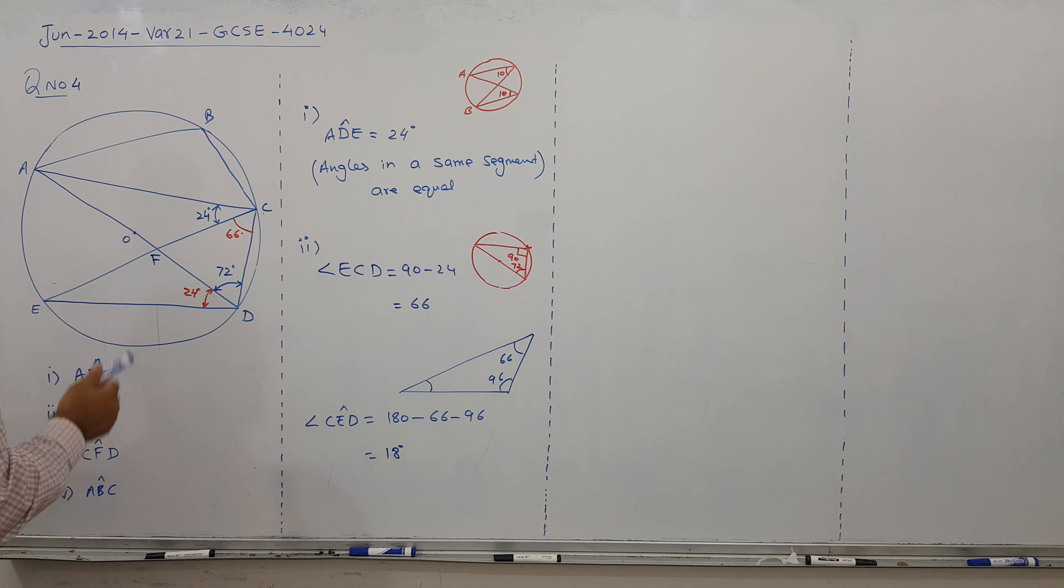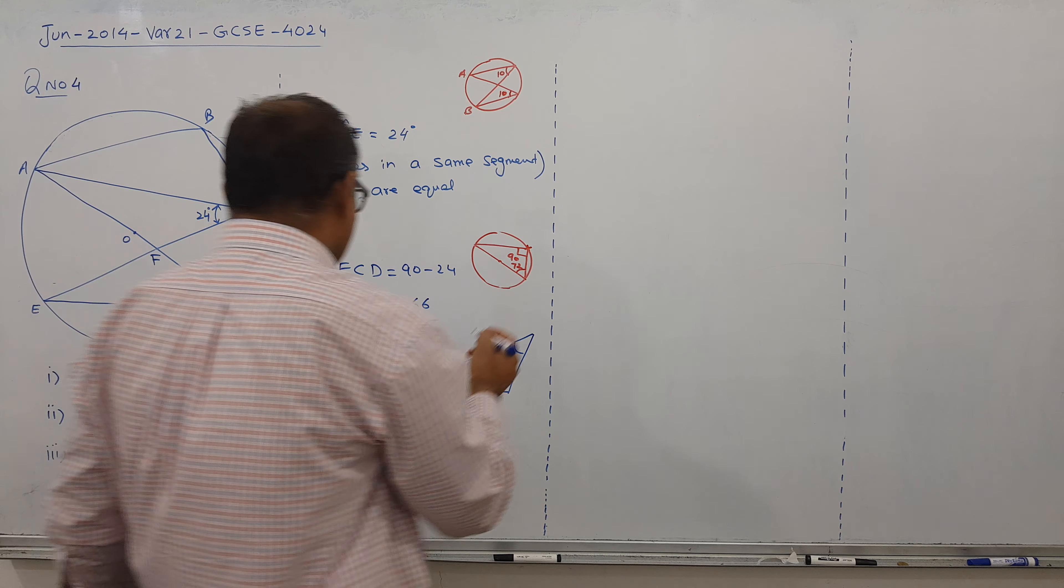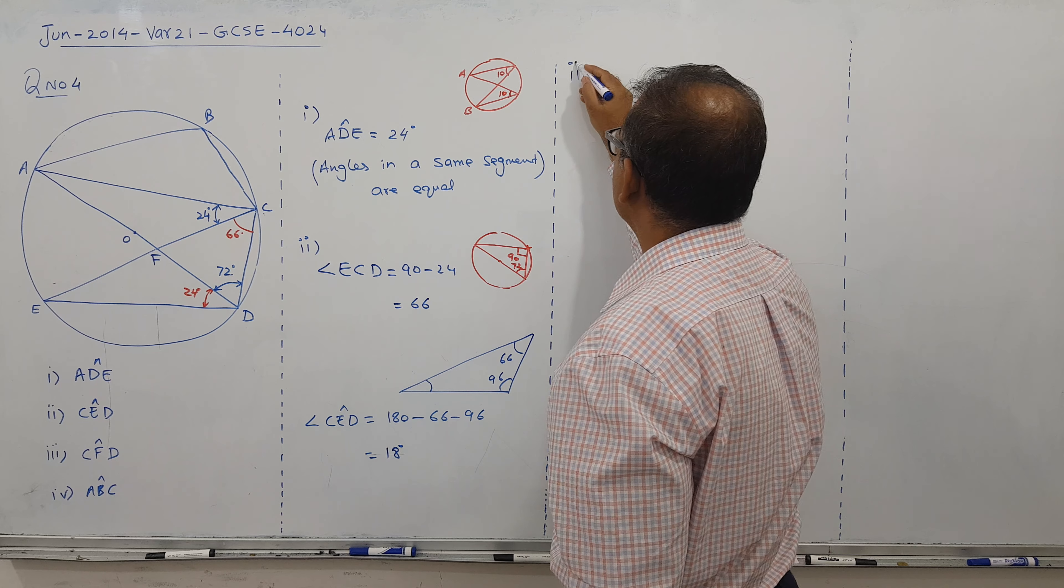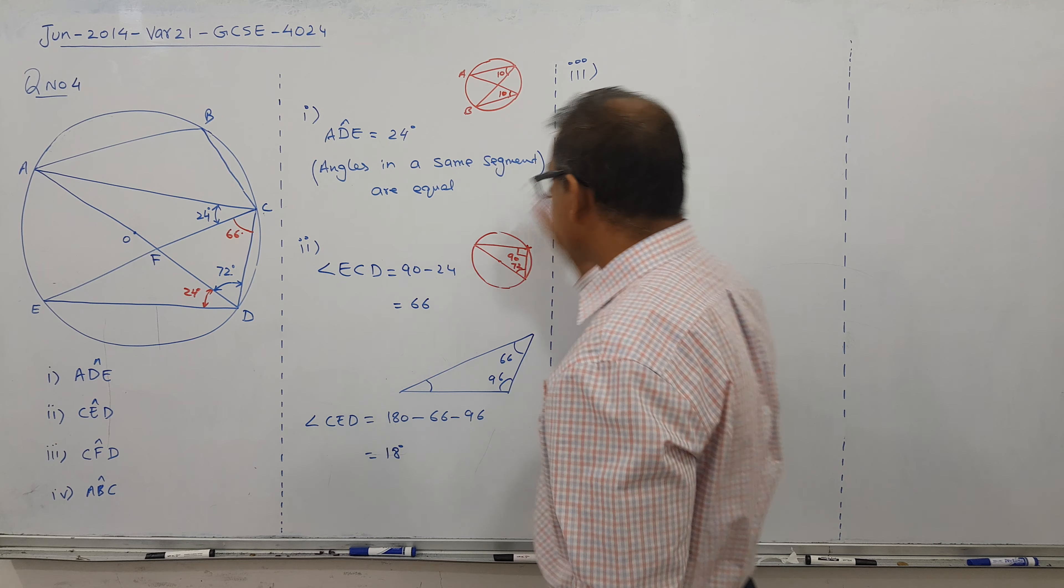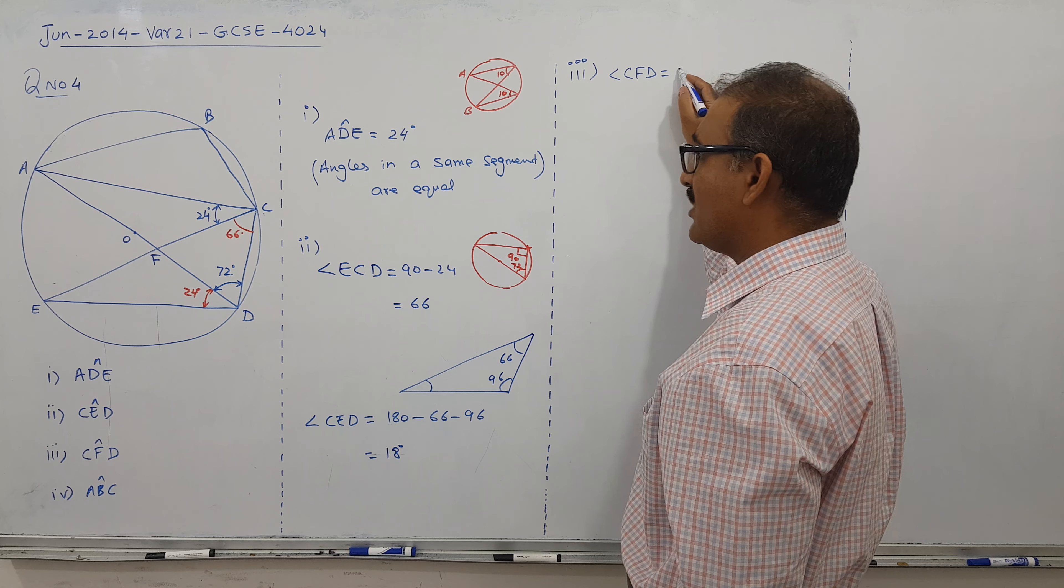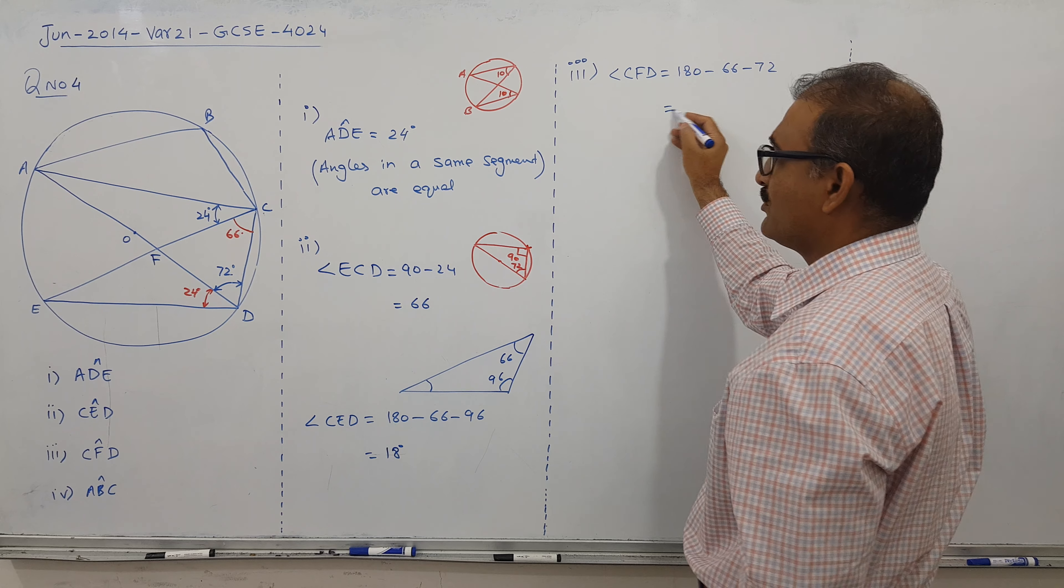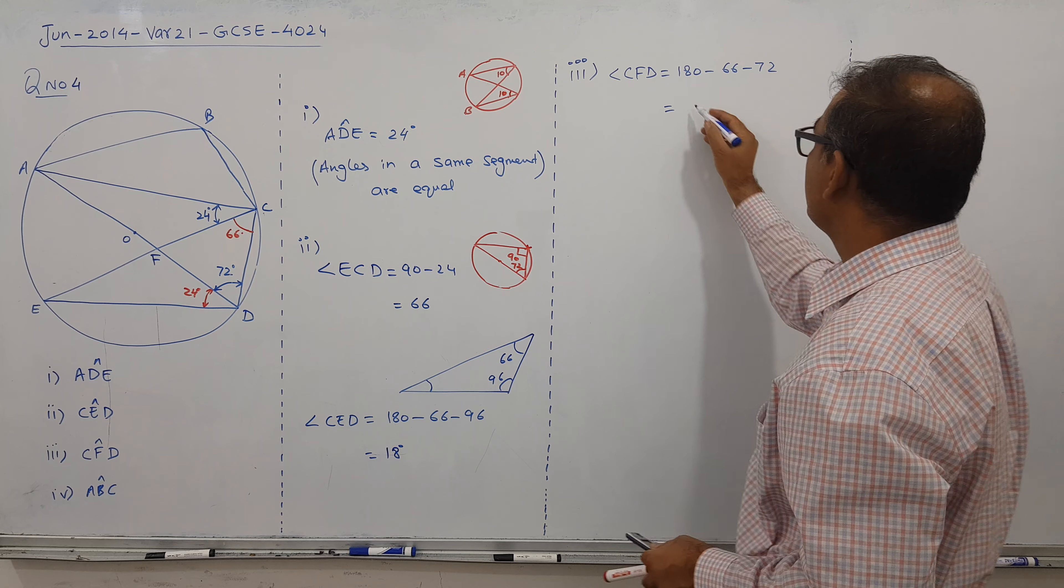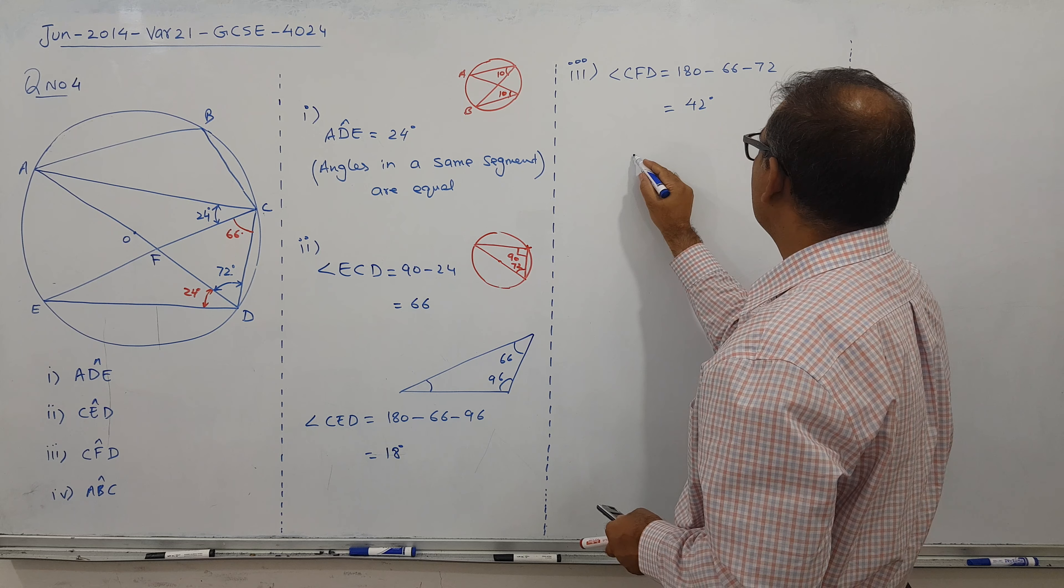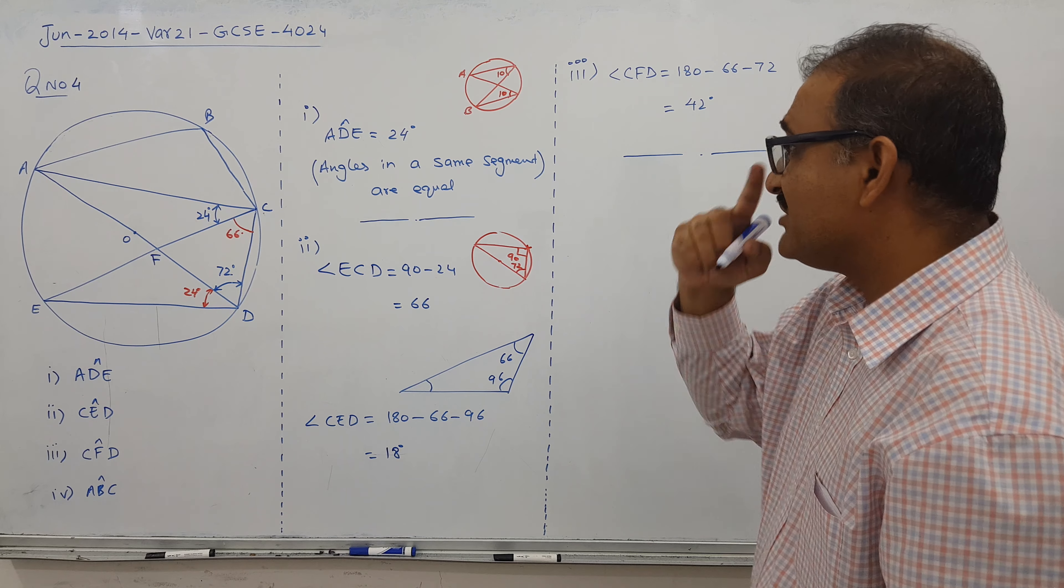Next one is CFD. So angle CFD, part number 3. Angle CFD equals 180 minus 66 and minus 72. The answer is 42 degrees. So this is clear. The first part ends here, second part is there, and third here.